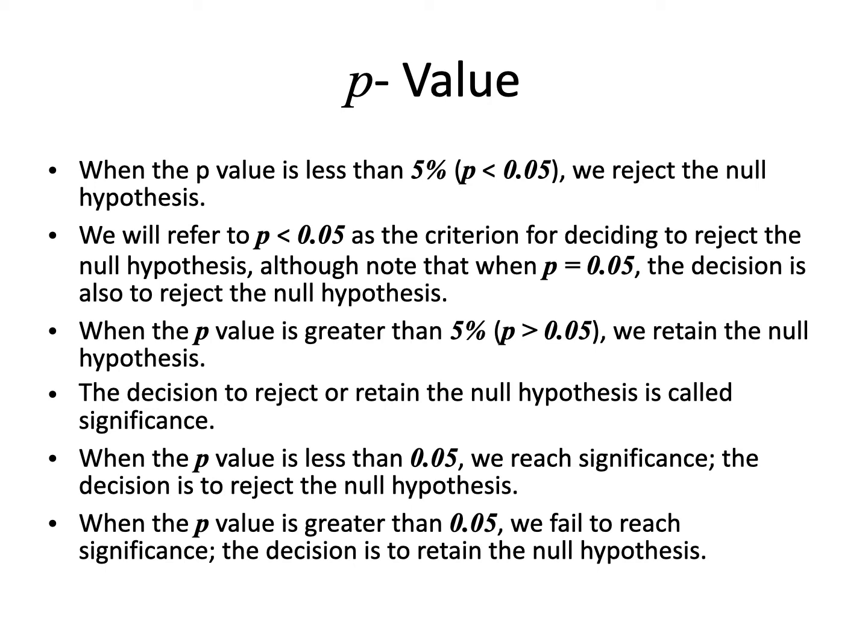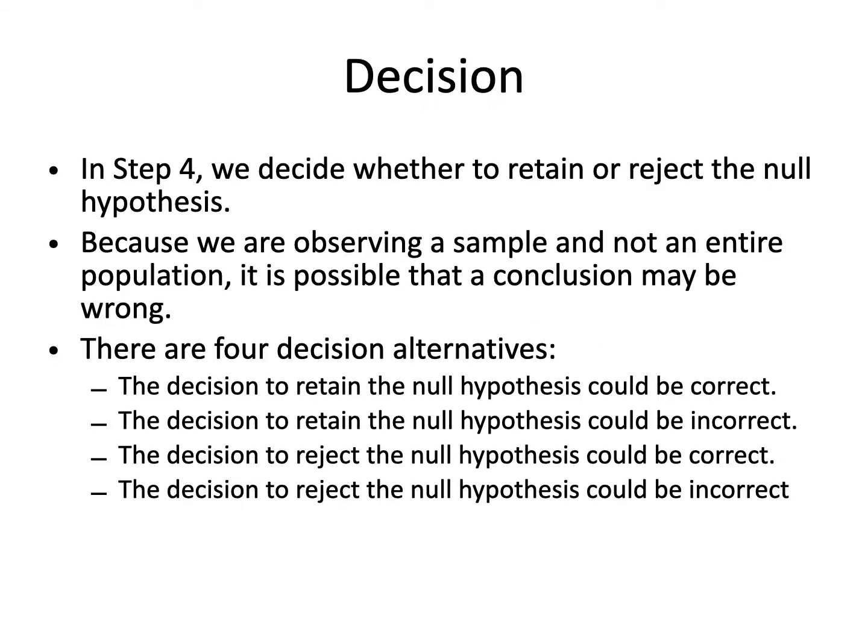When p equals 0.05, the decision is also to reject the null hypothesis. When the p-value is greater than 5%, we retain the null hypothesis. The decision to reject or retain the null hypothesis is called the significance test. When the p-value is less than 0.05, we reach significance and reject the null hypothesis. When the p-value is greater than 0.05, we fail to reach significance and retain the null hypothesis.